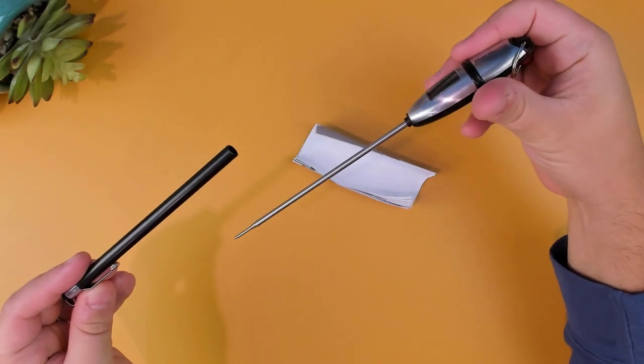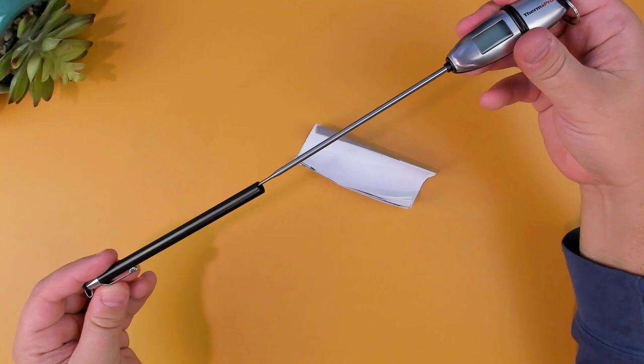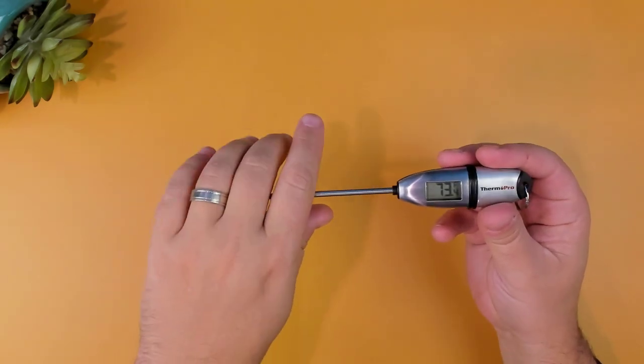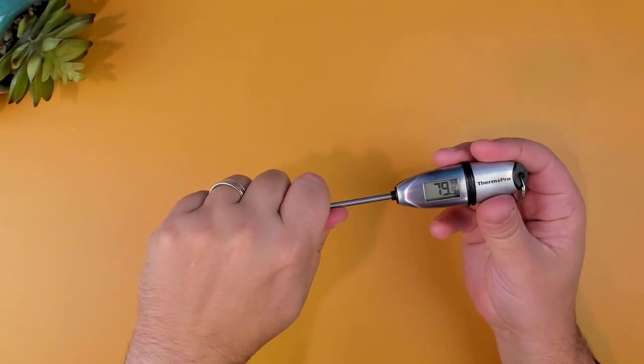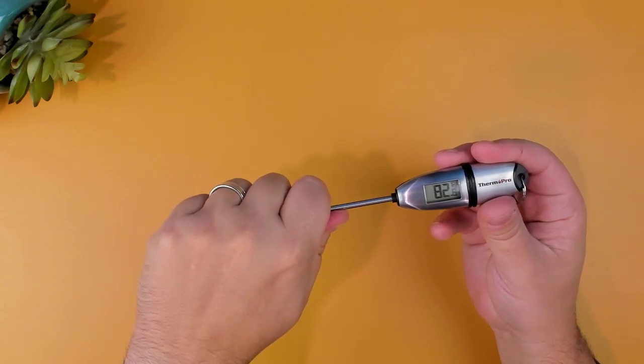With a temperature range of minus 58 to 572 Fahrenheit, the thermometer helps you cook any type of food to perfection, delivering a fast 4 to 7 second readout with accurate readings within 1.8 degrees.